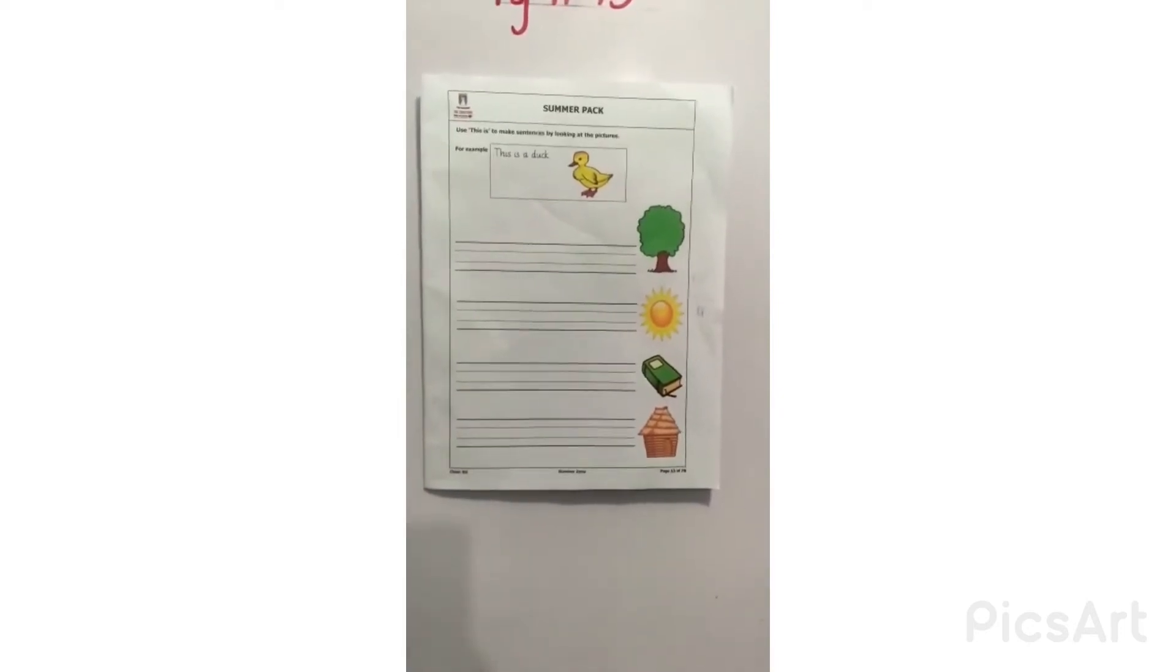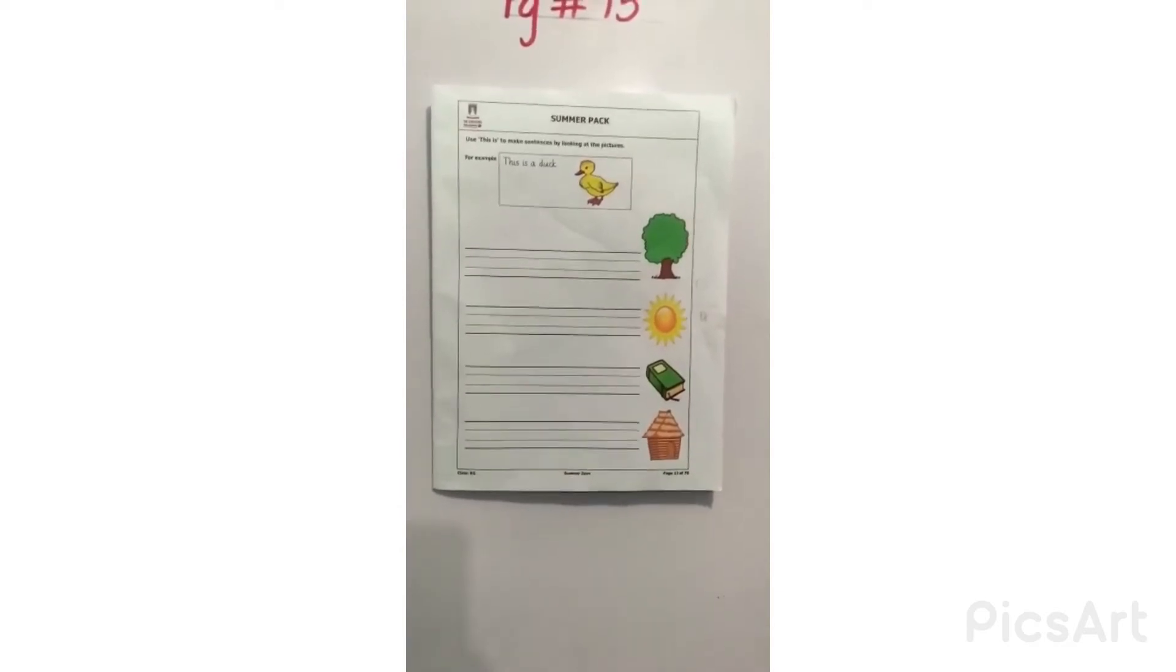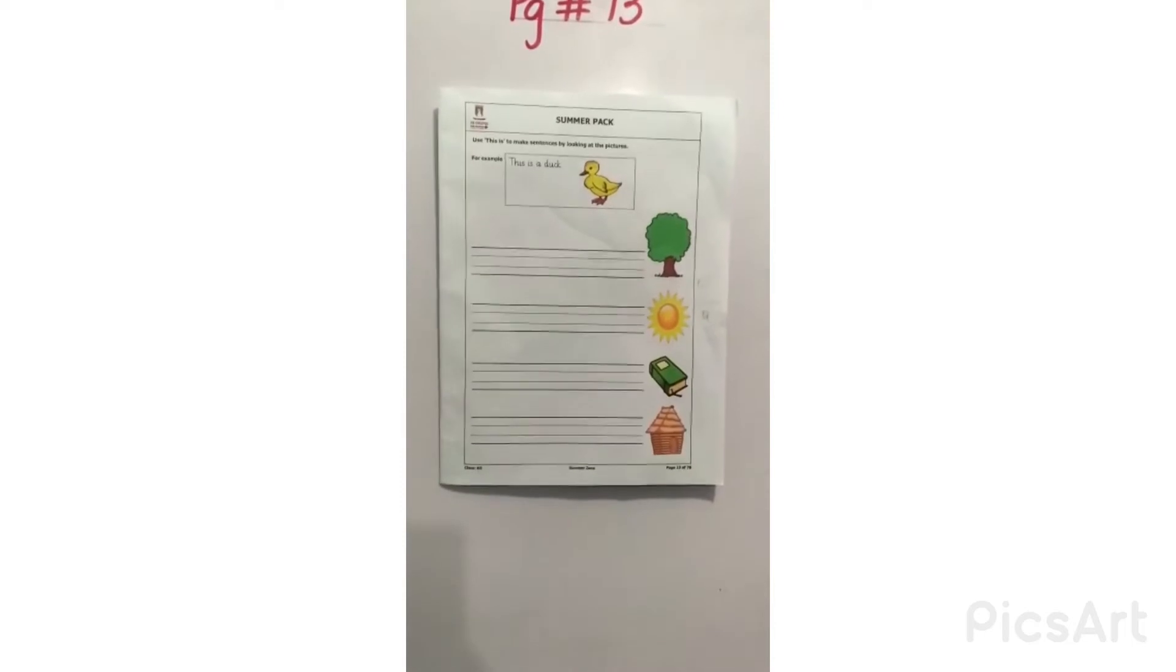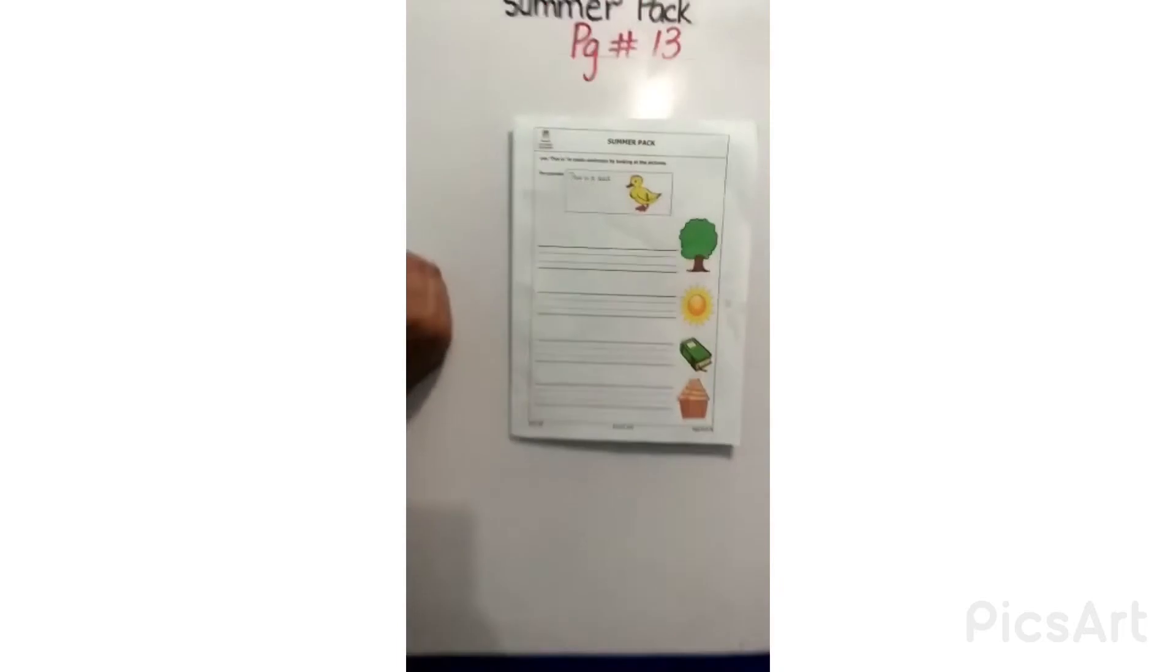Means, when you use any sentence, then you will start this is. For example, here we have a tree, a sun, a book, a hut and a hut. You have all the sentences in the start.